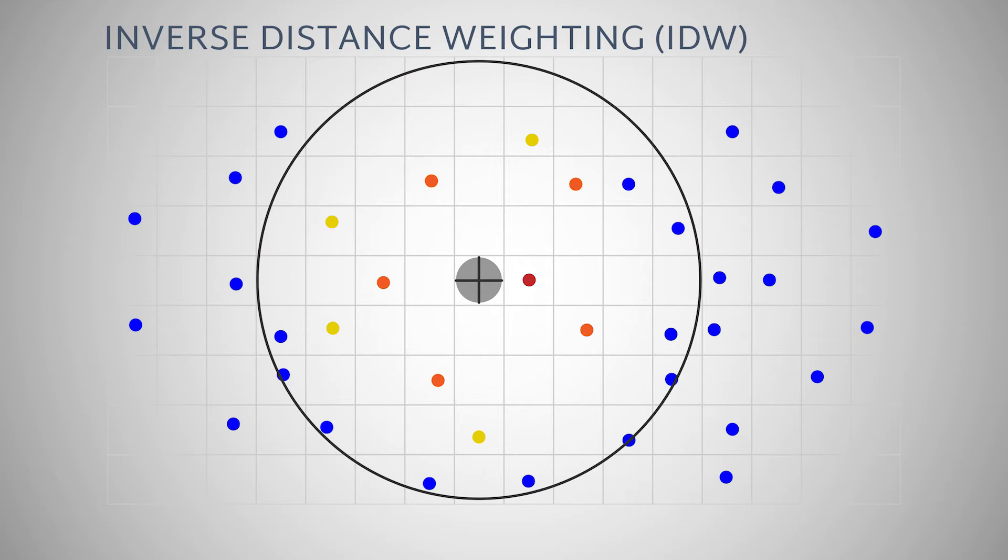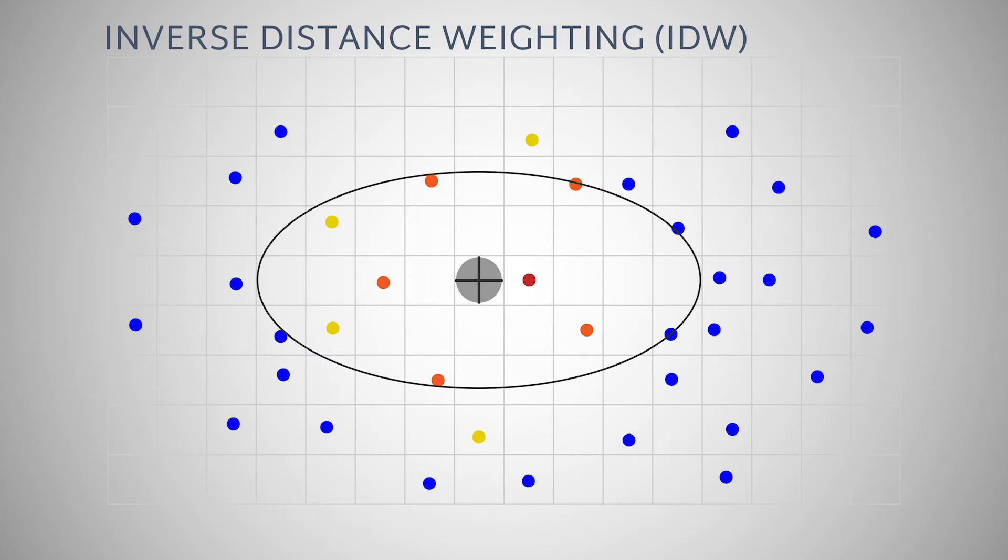The search neighborhood, an ellipsoidal region centered on the prediction point, can be modified by a GIS analyst in several ways. The major and minor semi-axis can be lengthened, shortened, and rotated to alter shape, area, and orientation of the ellipsoid.